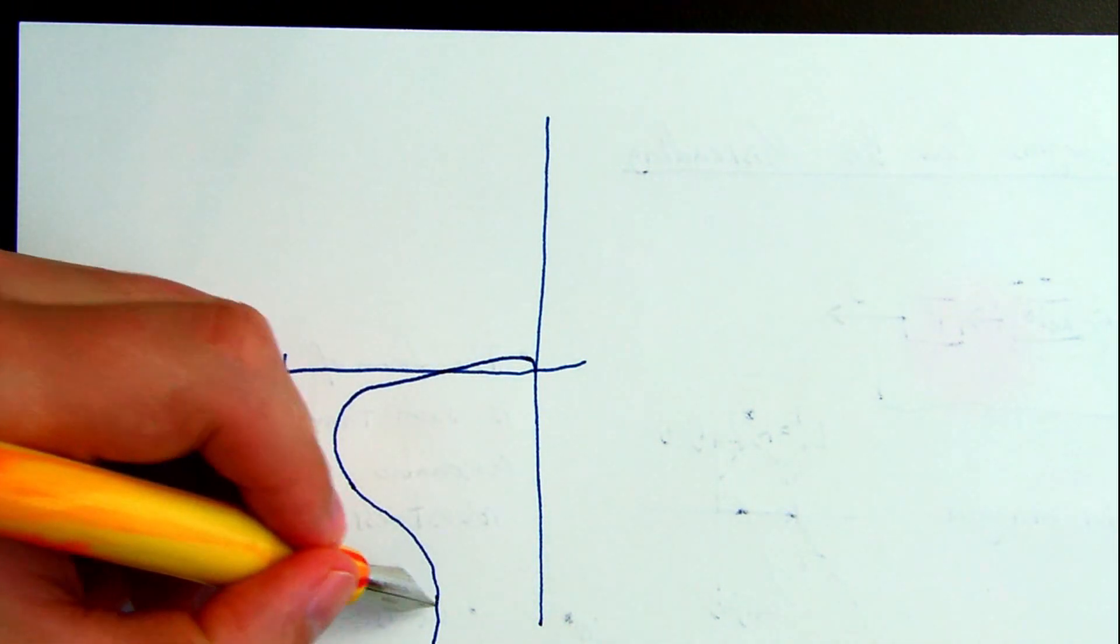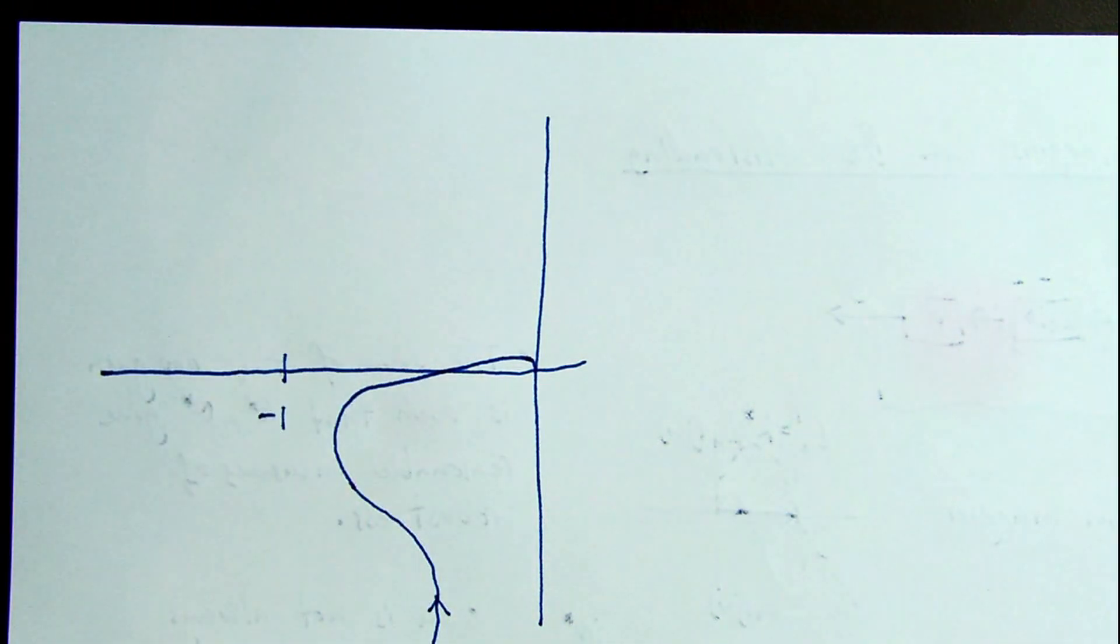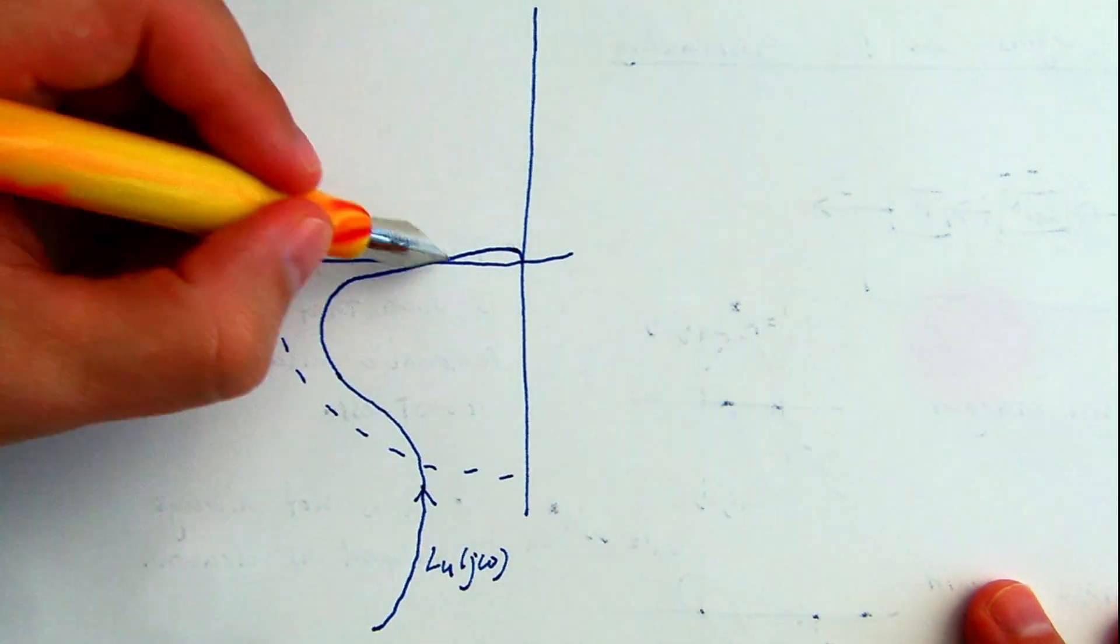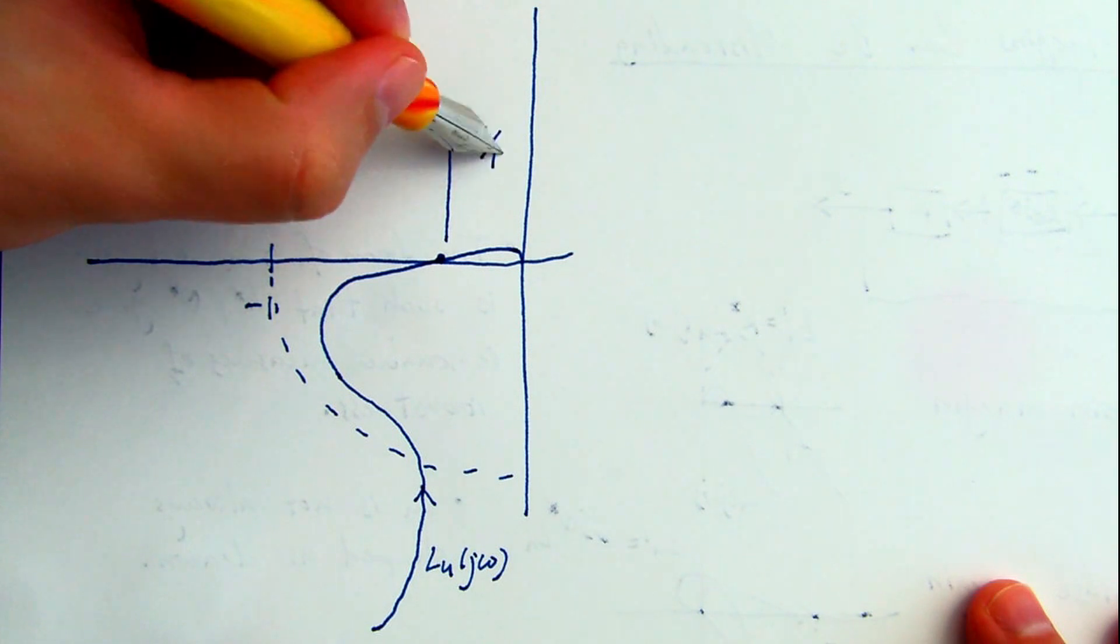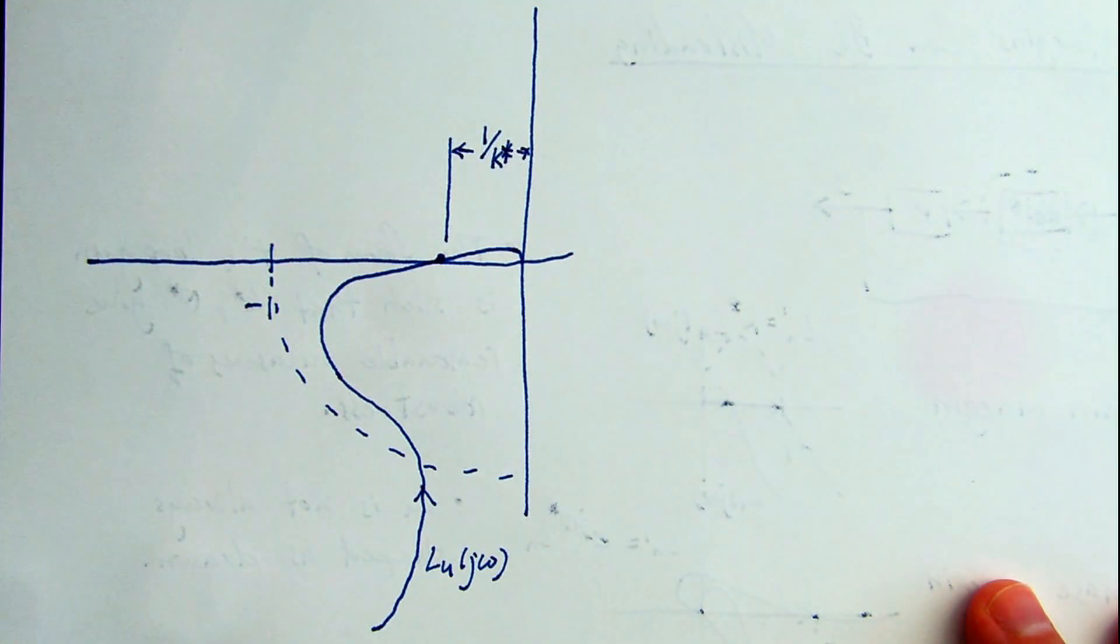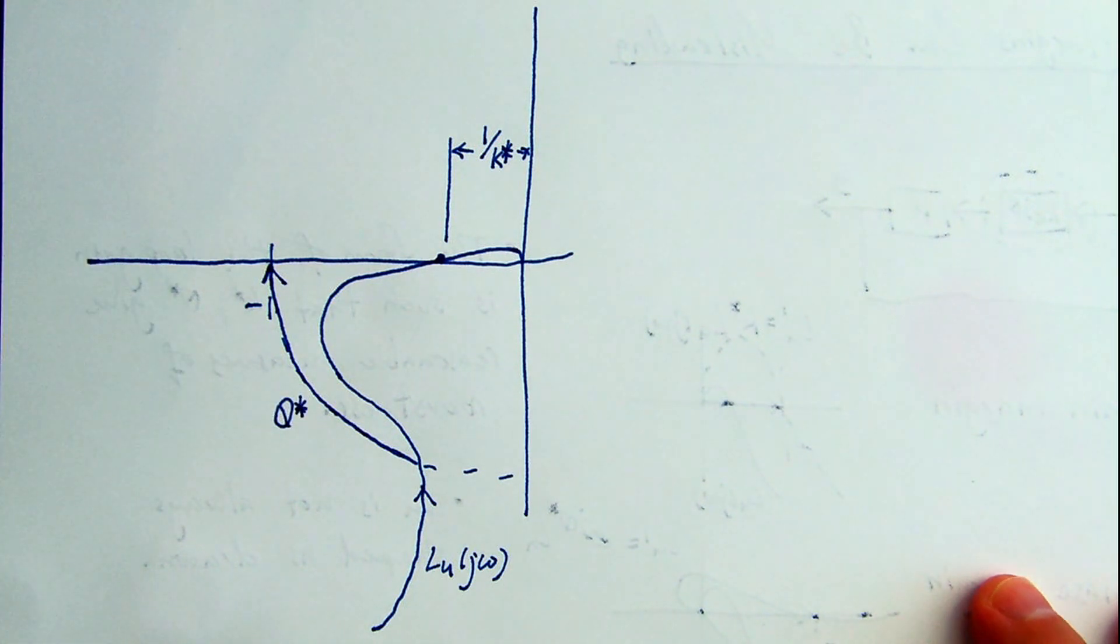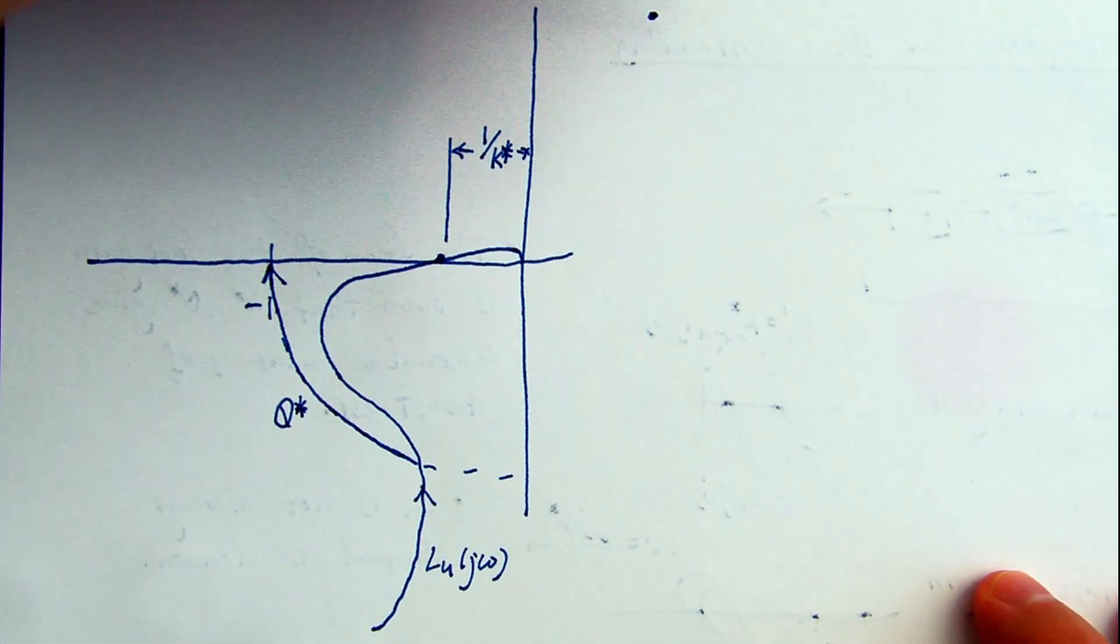Consider this form of a loop gain. LU at minus 180 degrees is small, so the k star gain margin will be fairly large.